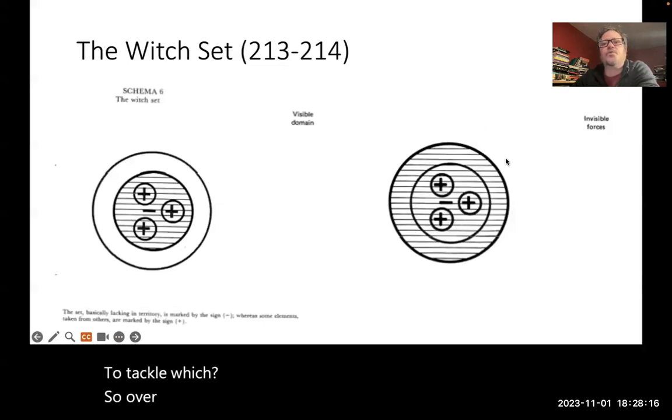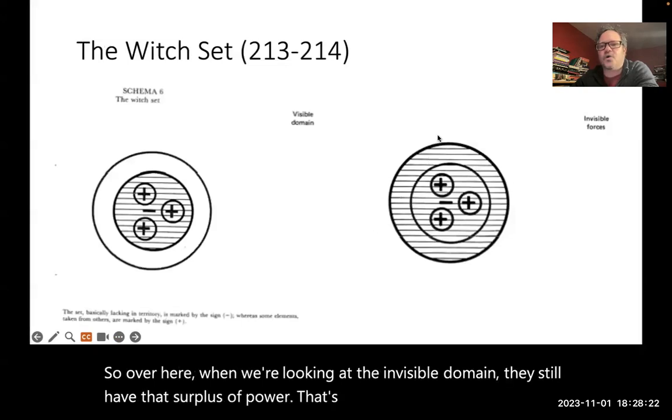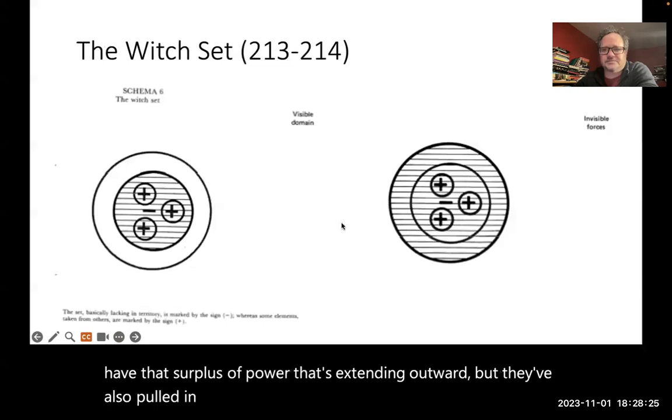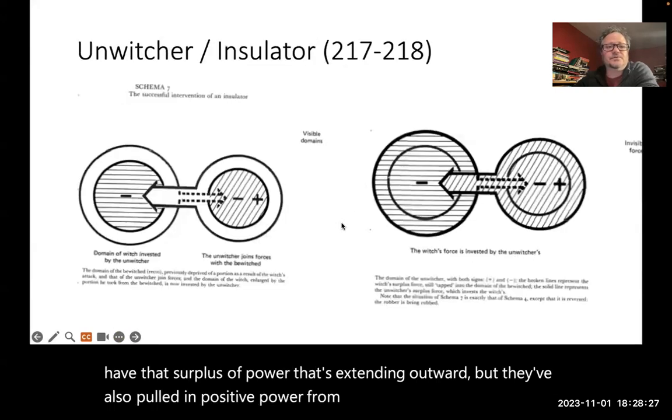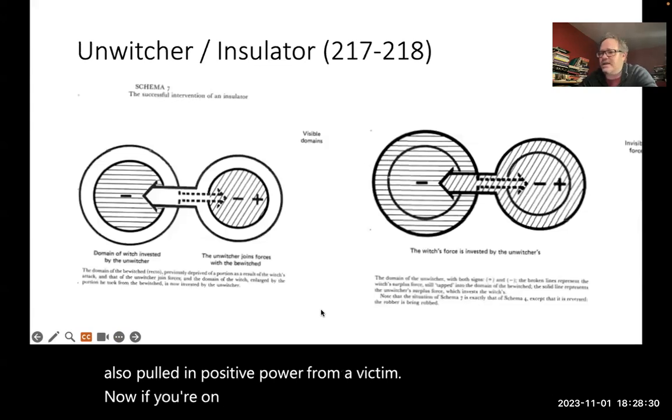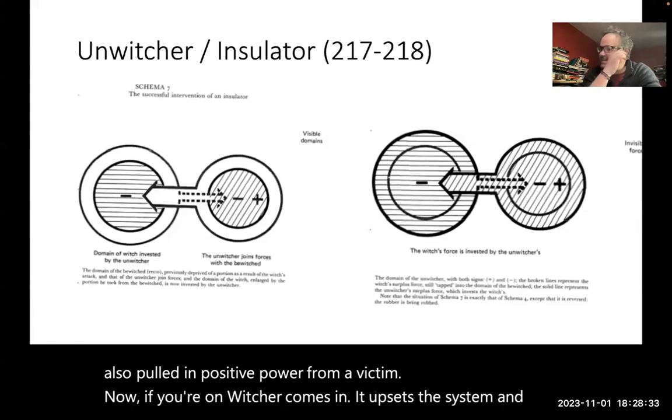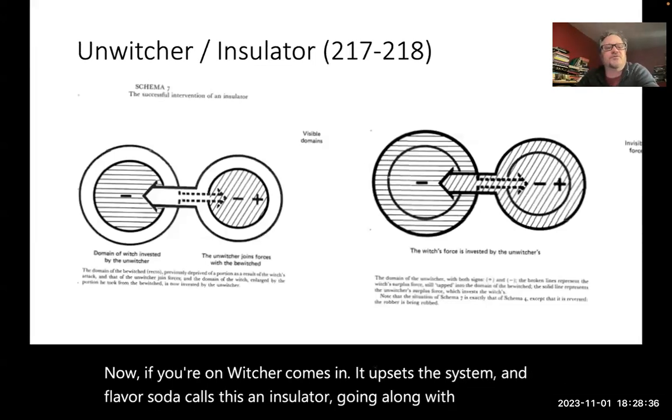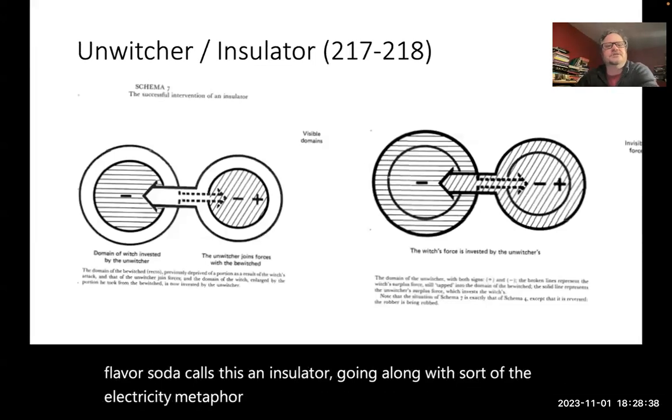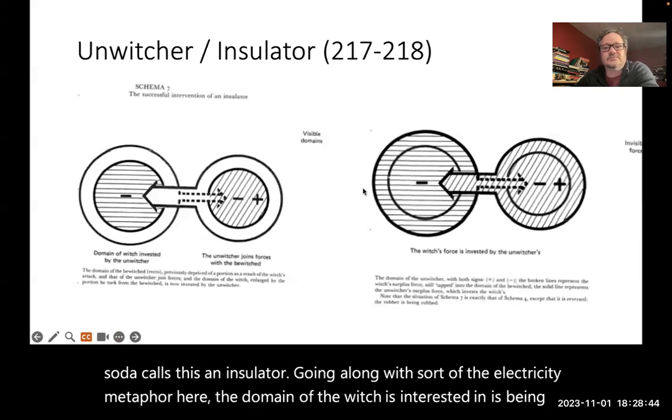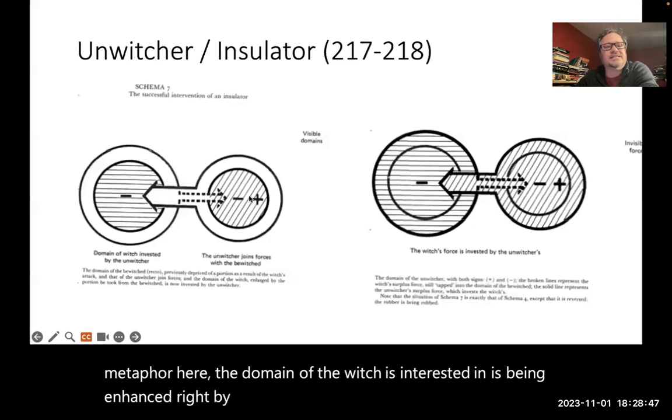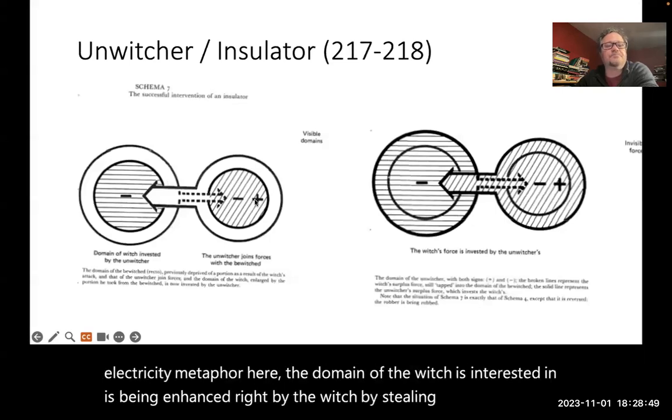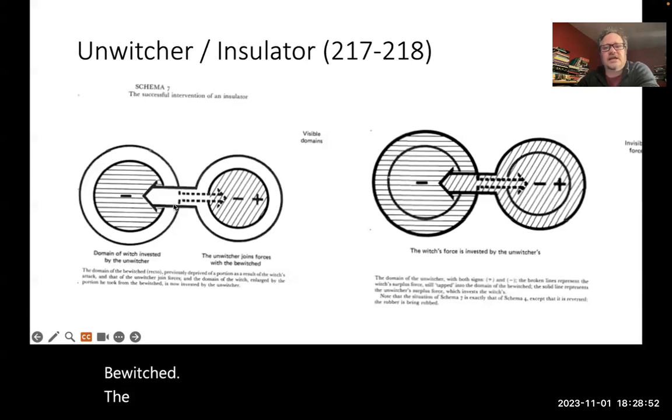So over here, when we're looking at the invisible domain, they still have that surplus of power that's extending outward. But they've also pulled in positive power from a victim. Now, if an unwitcher comes in, it upsets the system. And Favisada calls this an insulator, going along with the electricity metaphor. Here, the domain of the witch is interested and is being enhanced by the witch, by stealing from the bewitched.